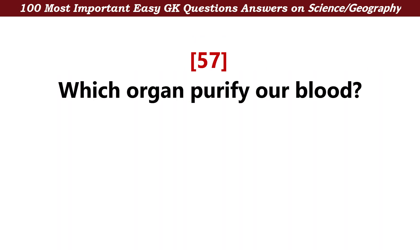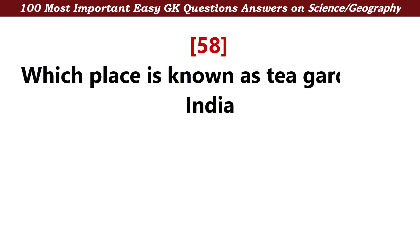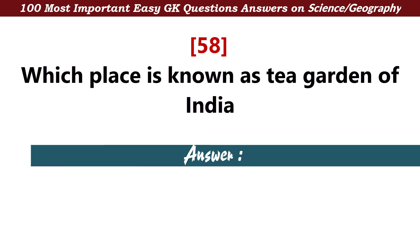Which organ purifies our blood? Answer: Kidney. Which place is known as the garden of India? Answer: Assam.